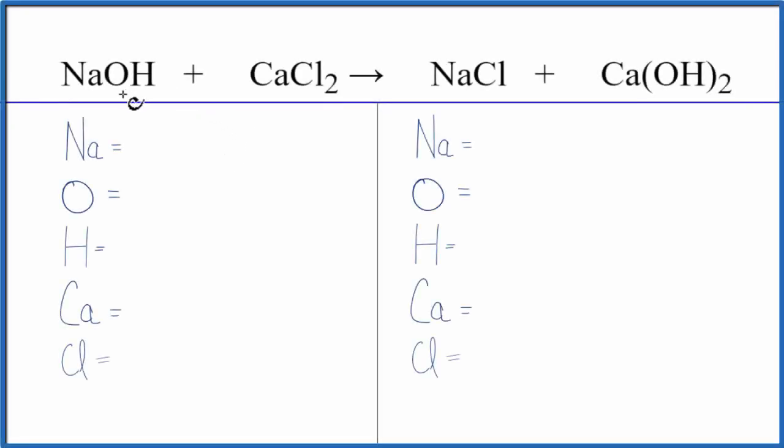To balance this equation, NaOH plus CaCl2, that's sodium hydroxide plus calcium chloride, let's add the atoms up on each side of the equation.